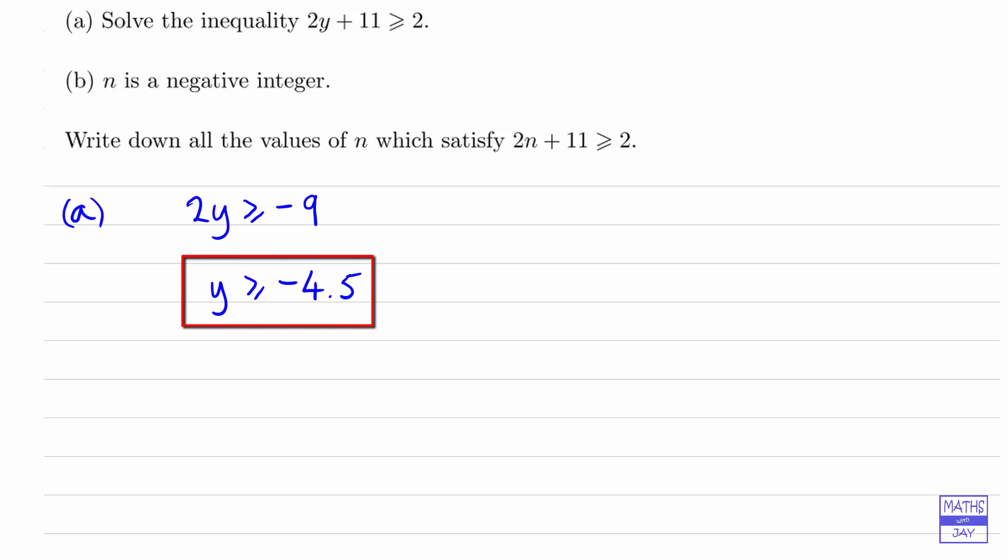As ever when we've got an inequality, we do two checks. First, we'll check for equality, so we'll see what happens when y equals minus 4.5. Then 2y plus 11 will equal 2 times negative 4.5 plus 11. So that's negative 9 plus 11, and that's 2. So that's good.